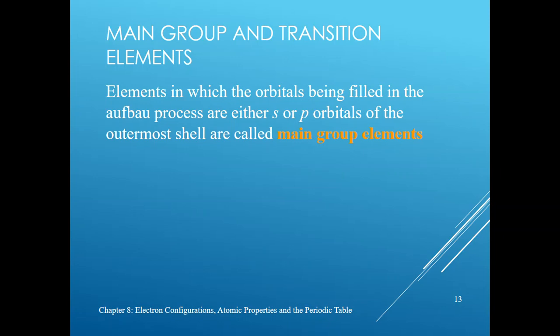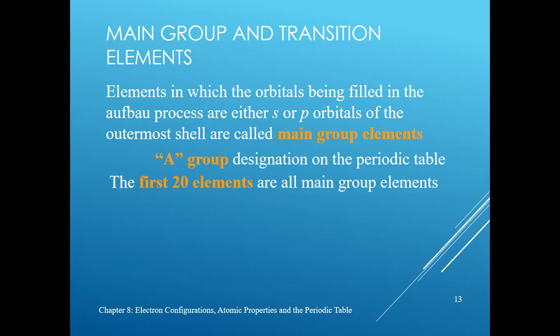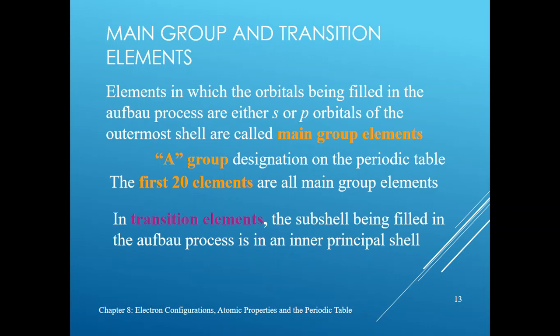Some elements are located in regions of the periodic table called the main group elements. What they have in common is that as you go from one element to the next, you're adding electrons to either an s or p orbital. These are known as the A-group elements, and the first 20 elements in the periodic table belong to this region. Then you have the transition elements, where as you go from one element to the next, you're adding an electron to a d or f orbital.